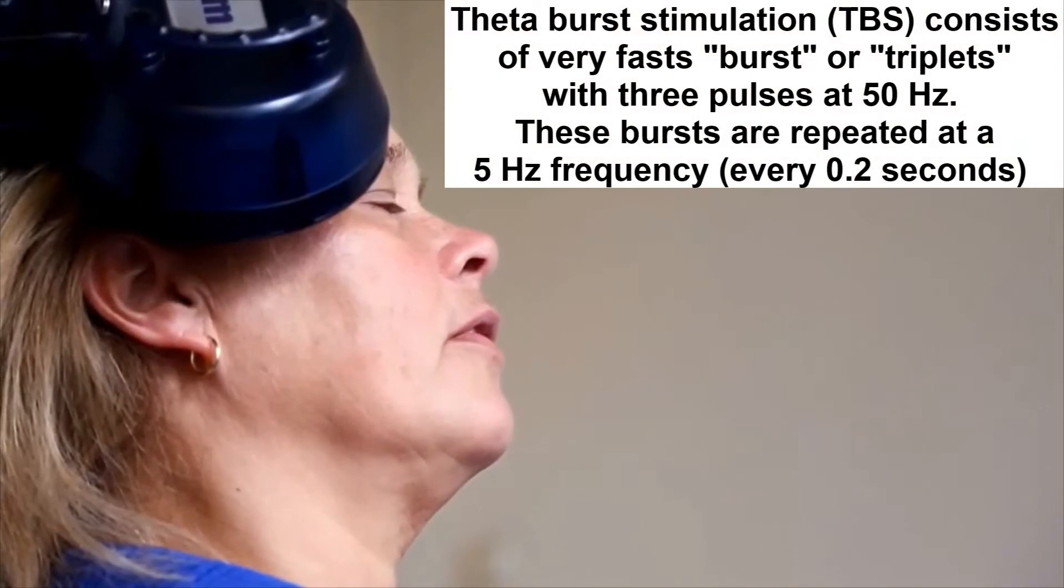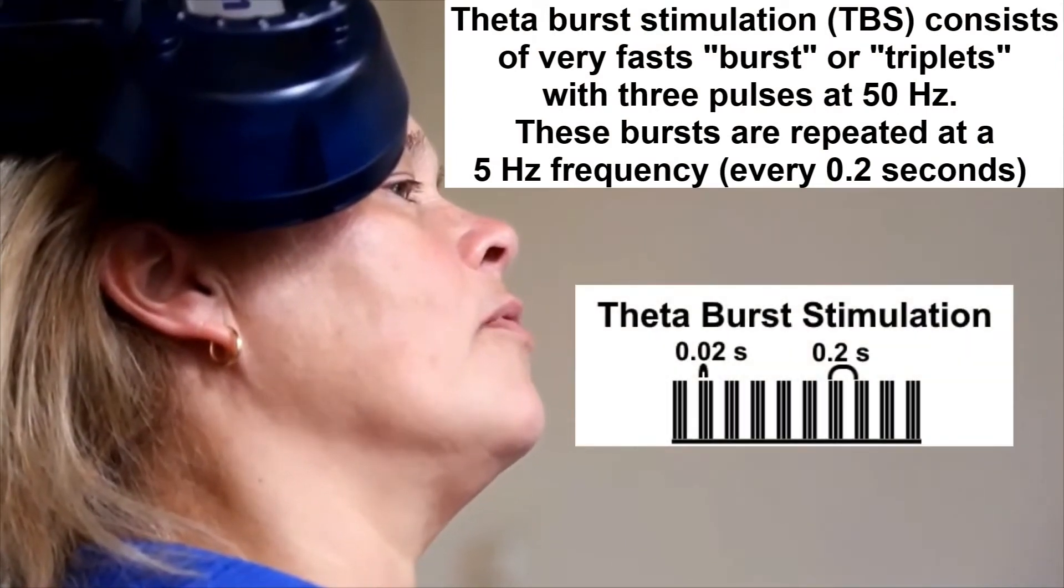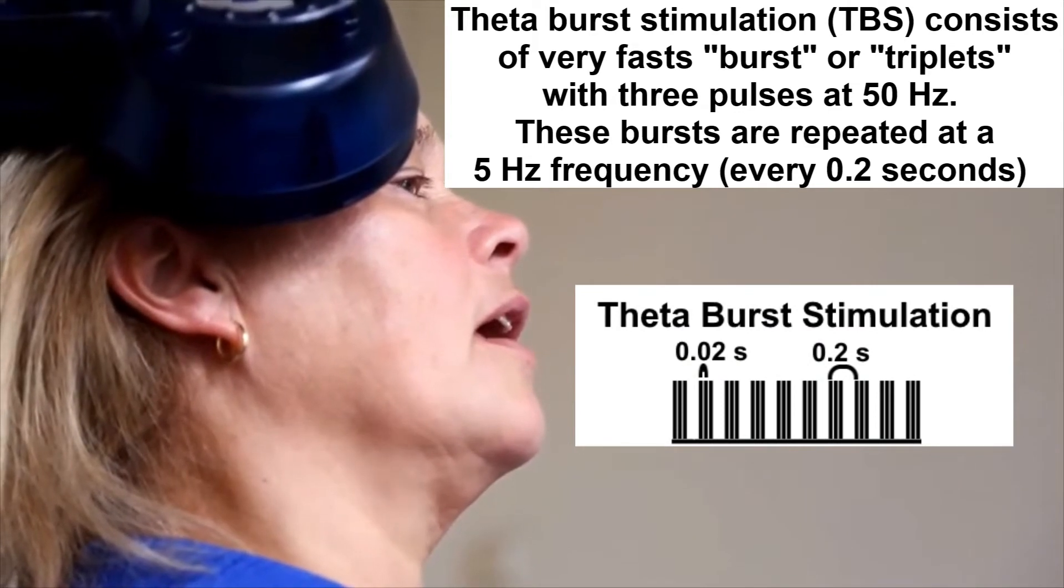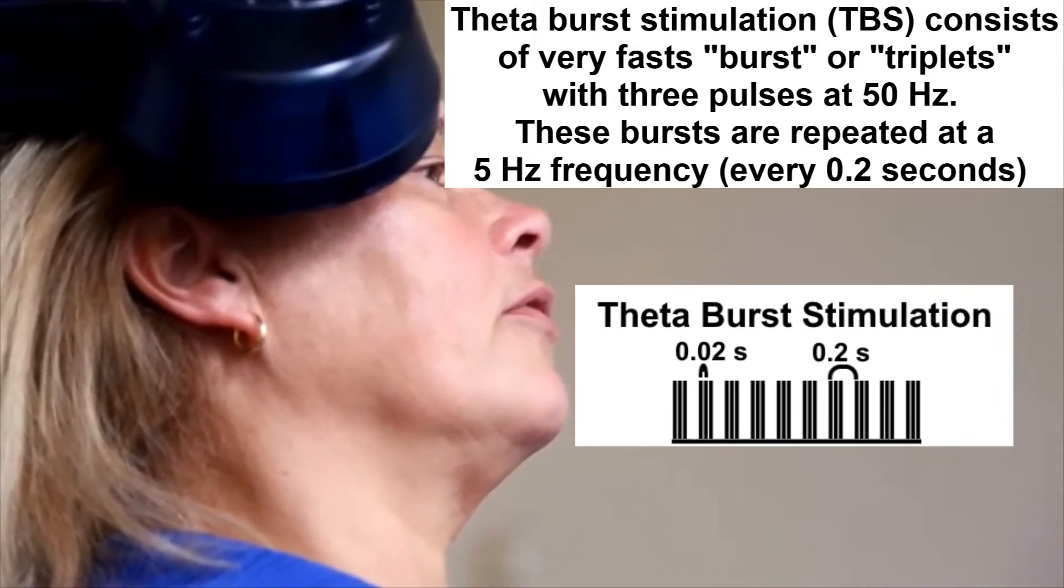During theta burst stimulation, very fast bursts of three pulses are applied. And these bursts are repeated five times per second. As with other RTMS paradigms, theta burst stimulation can be used to activate or inhibit a brain region.